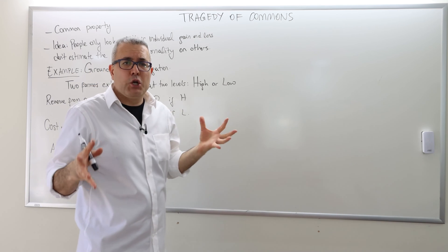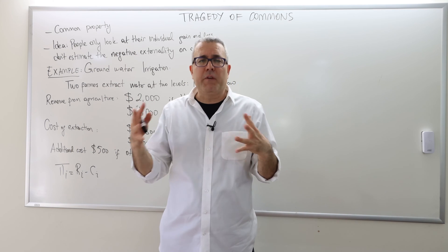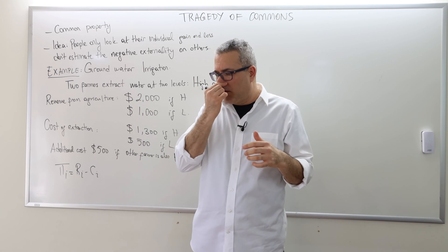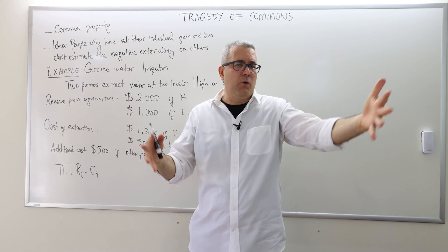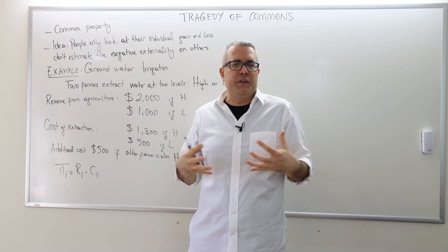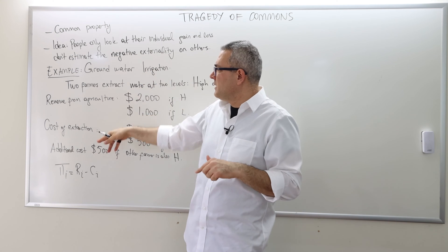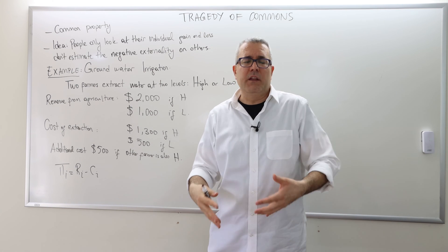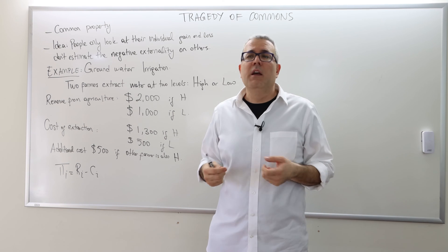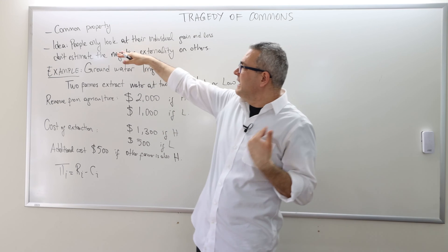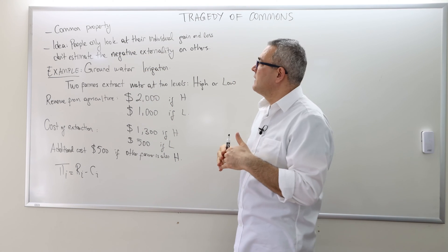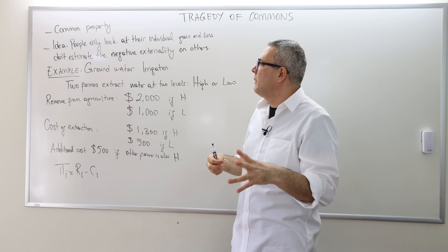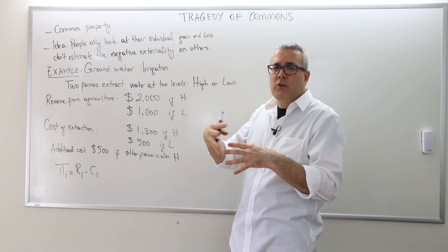The idea is the following. There's a common good, a good that a group of agents can use simultaneously, like fishing — all the fishers can go to the ocean and collect as many fish as they like. In the specific example, we're going to talk about groundwater irrigation. There's water underneath and we extract as many water as we like. But what happens is that people in such circumstances usually look at their own individualistic gains and losses, and they don't really estimate the negative externality they create on other agents.